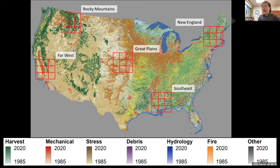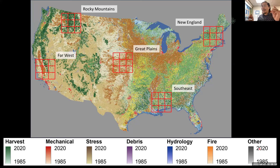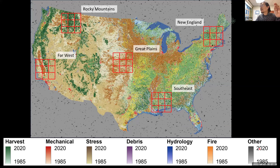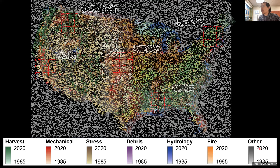It hasn't been validated yet and we already see places that are not very accurate — we're trying to improve it. What you see is the land disturbance agent map: the same land cover can have harvest, mechanical, stress, debris, hydrology, fire, or other disturbance agents. The agent can happen on any kind of land surface. That's the map we just created using lots of cores, classifying 175 features, fully automated using open source data.